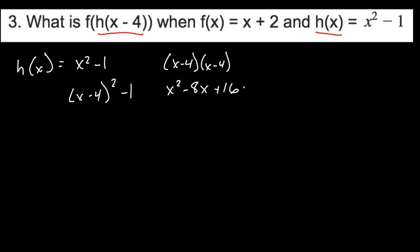Don't forget, we still have a minus 1 in our function. So when we put that on here, we are left with x squared minus 8x plus 15. So we have solved h of x.